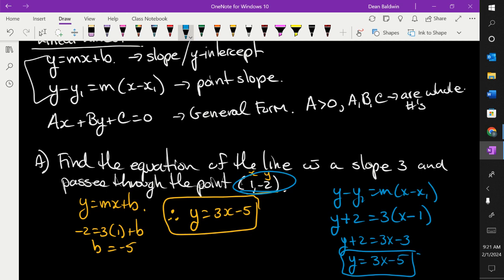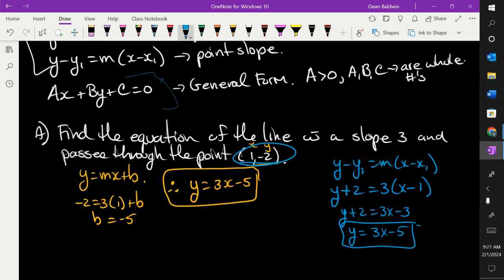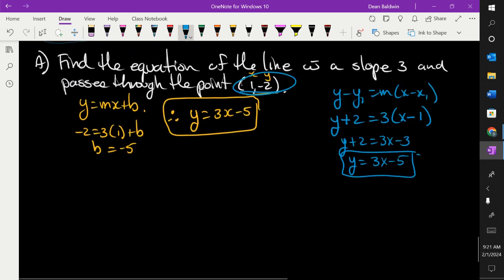The book will say, write it in standard form. So standard or general form is this. So I need to get everything to one side, make it equal to 0. And your A value has to be positive. So what do you want to move? The x's or the y? Move the y, right? Because the x is already positive here. So if you're going to write this in standard form, I'd move the y over, and you're going to get 0 = 3x - y - 5. That's standard form. All those three are the exact same. I don't care how you do it. It's your choice.